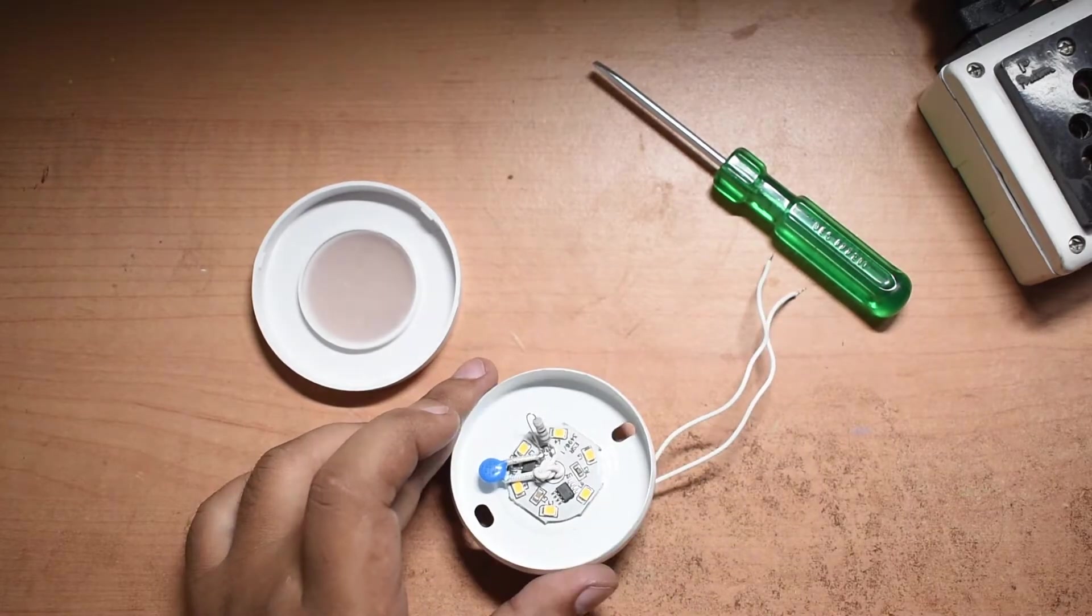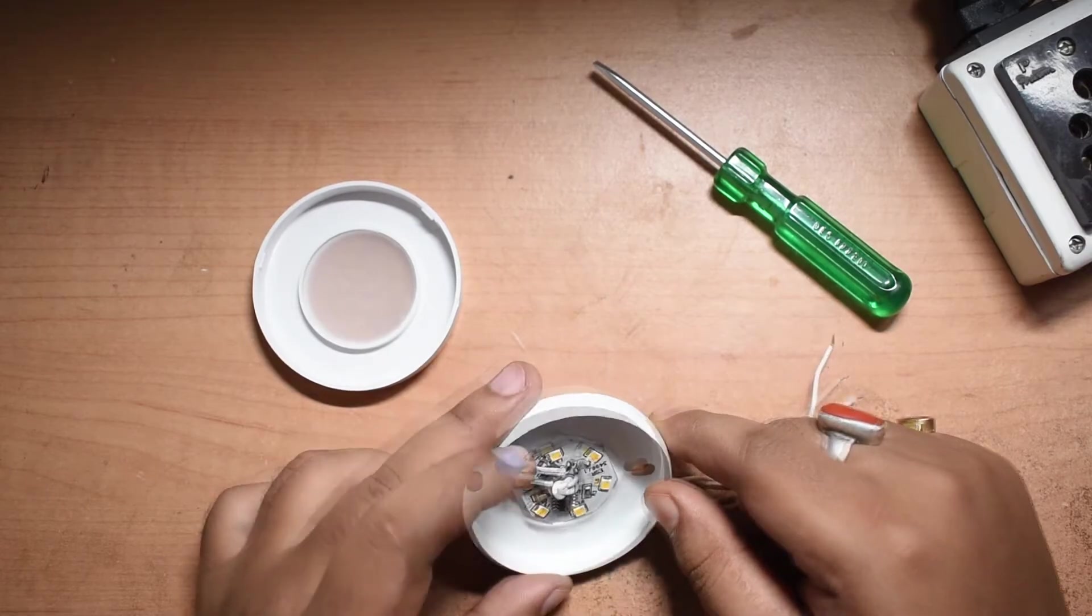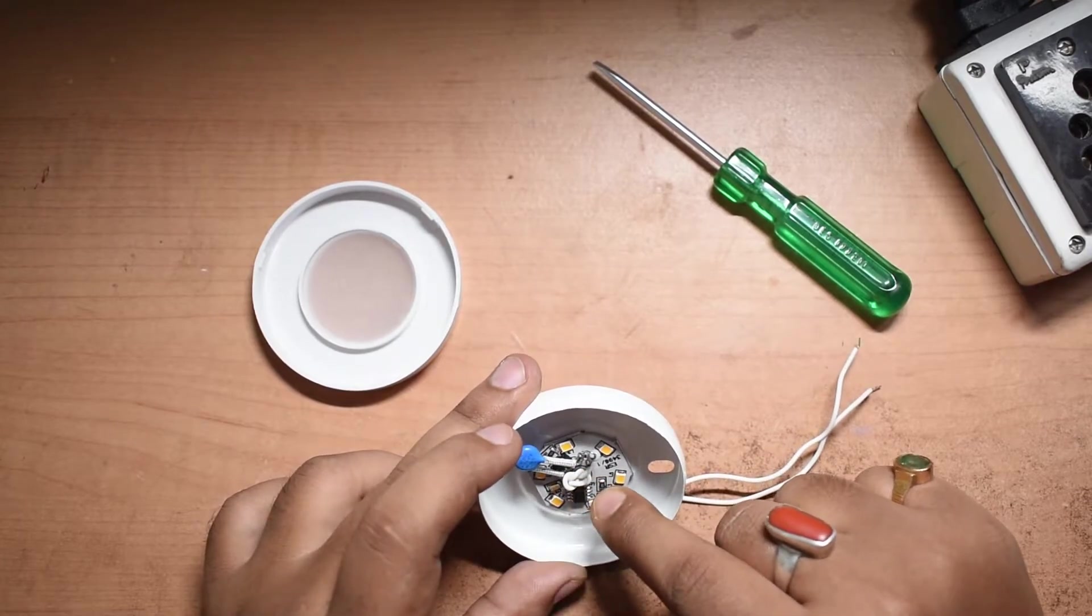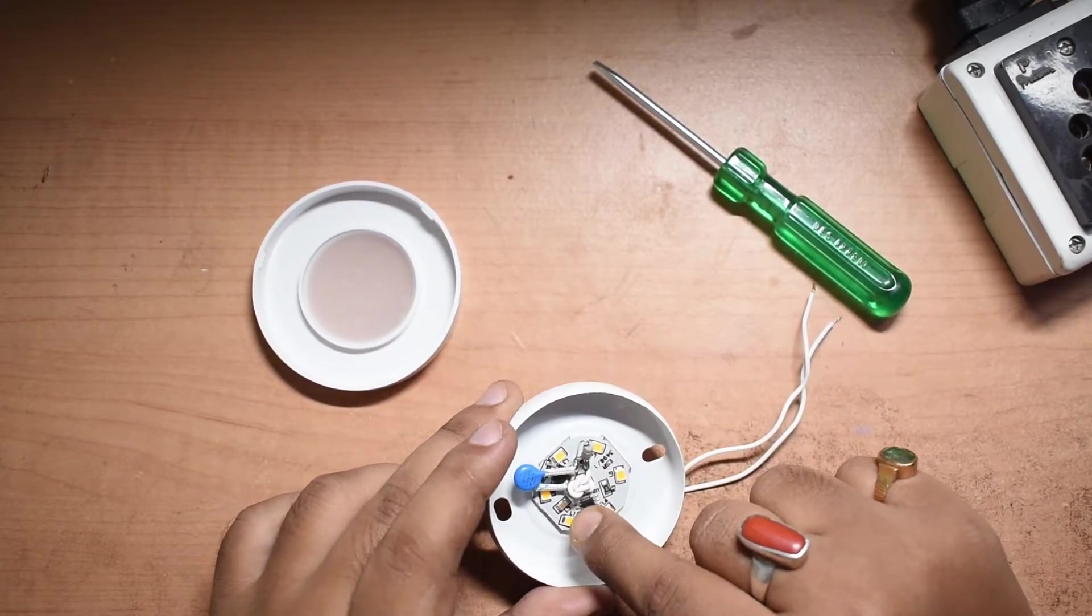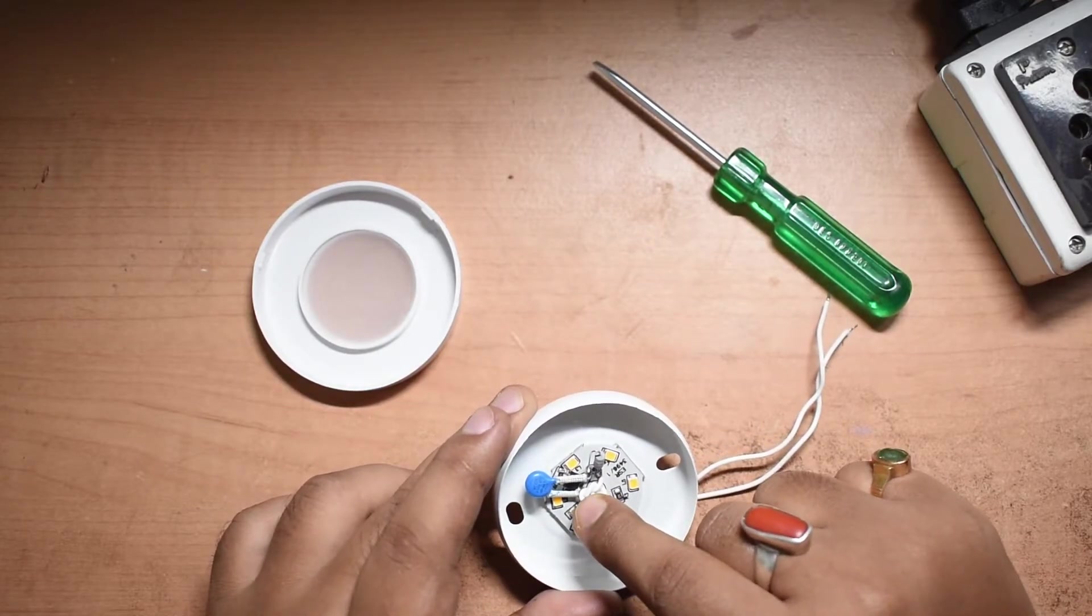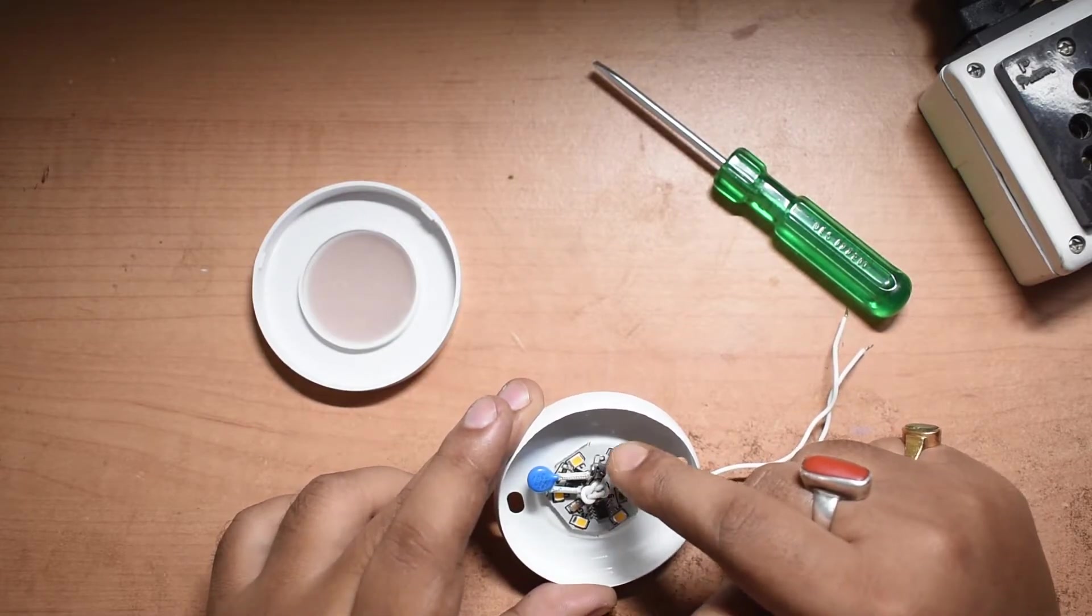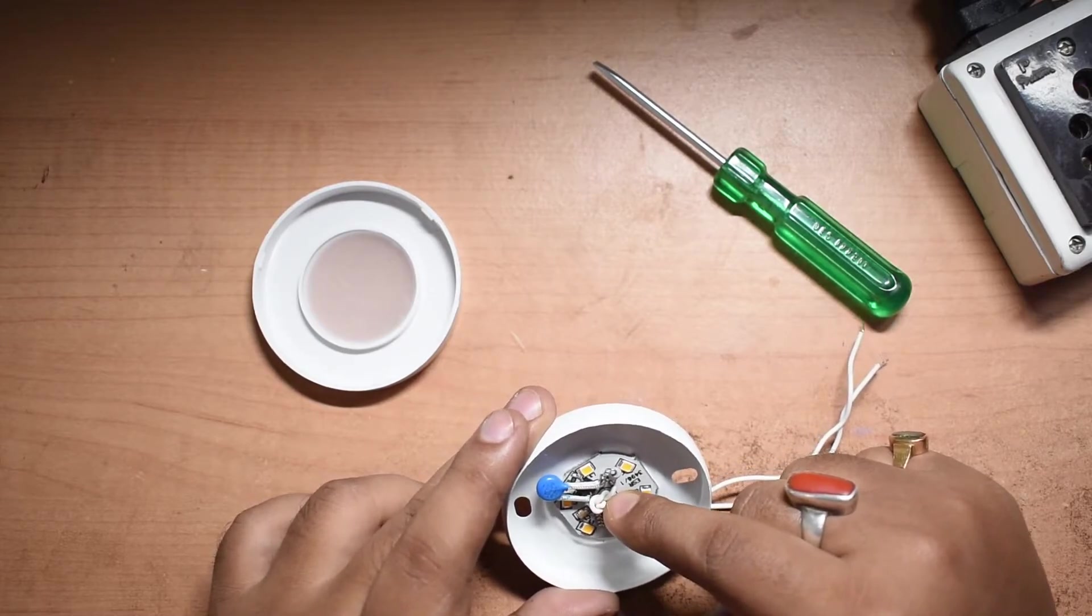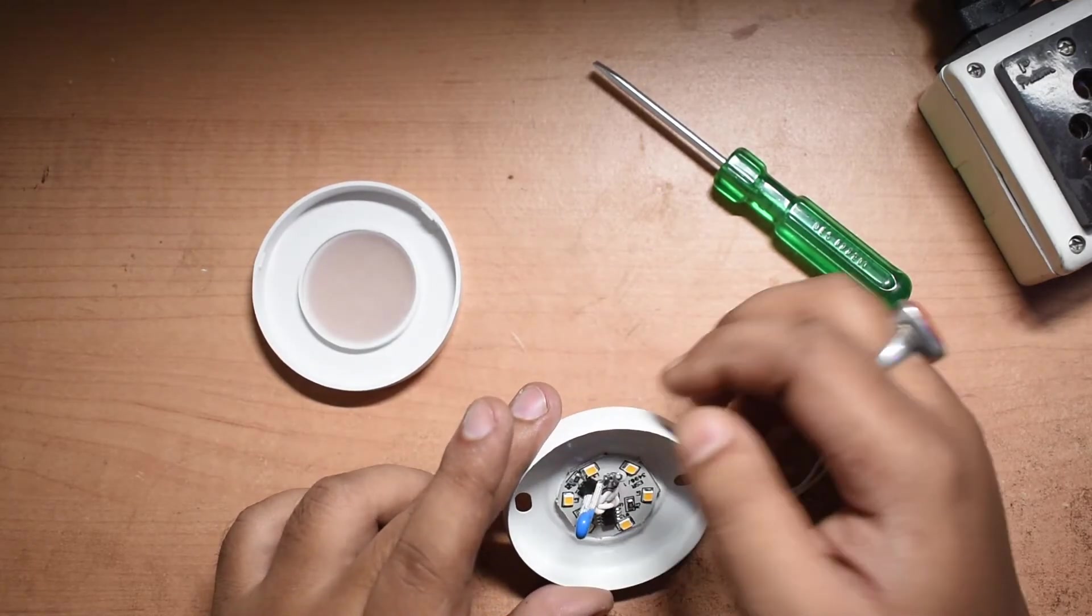The circuit looks fairly simple. The mains comes in directly into one of these resistors and the other lead is connected to this capacitor and the bridge rectifier together. The other end is connected via the resistor and the resistor is in turn connected to the other end of the bridge rectifier and the capacitor together. Then the output of the bridge rectifier is connected to a discharge resistor.